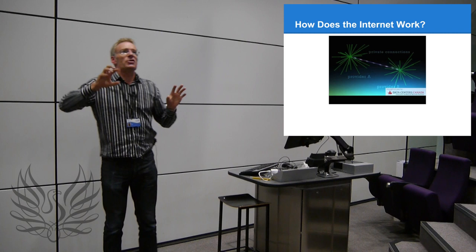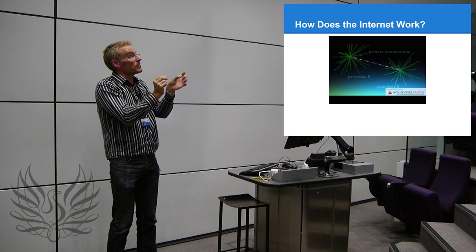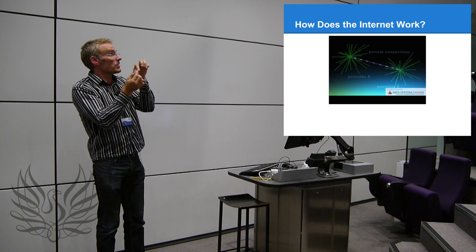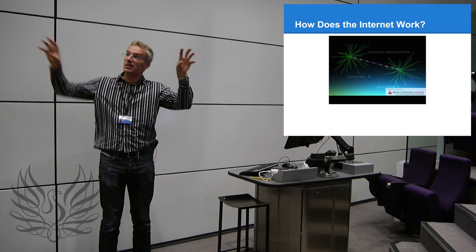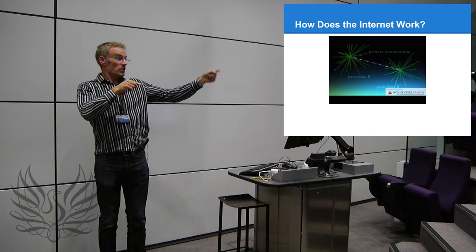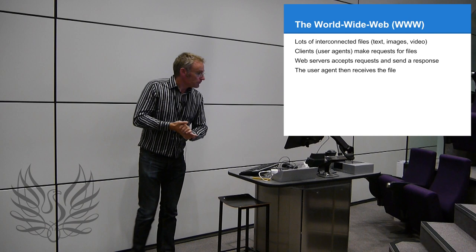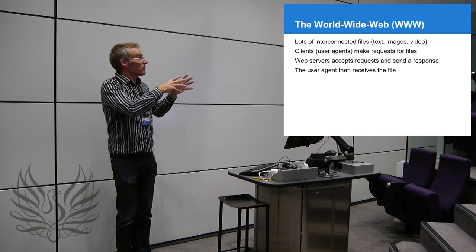The way data transfer works is you've got a series of nodes in the network — each server, each switch is a node. When data is sent from one place to another, it's broken into small packets — 64K packets. Each packet has data telling you where it's got to end up. Different packets can take different routes around the internet to get to the same destination, then they all get reassembled at the end into the document.